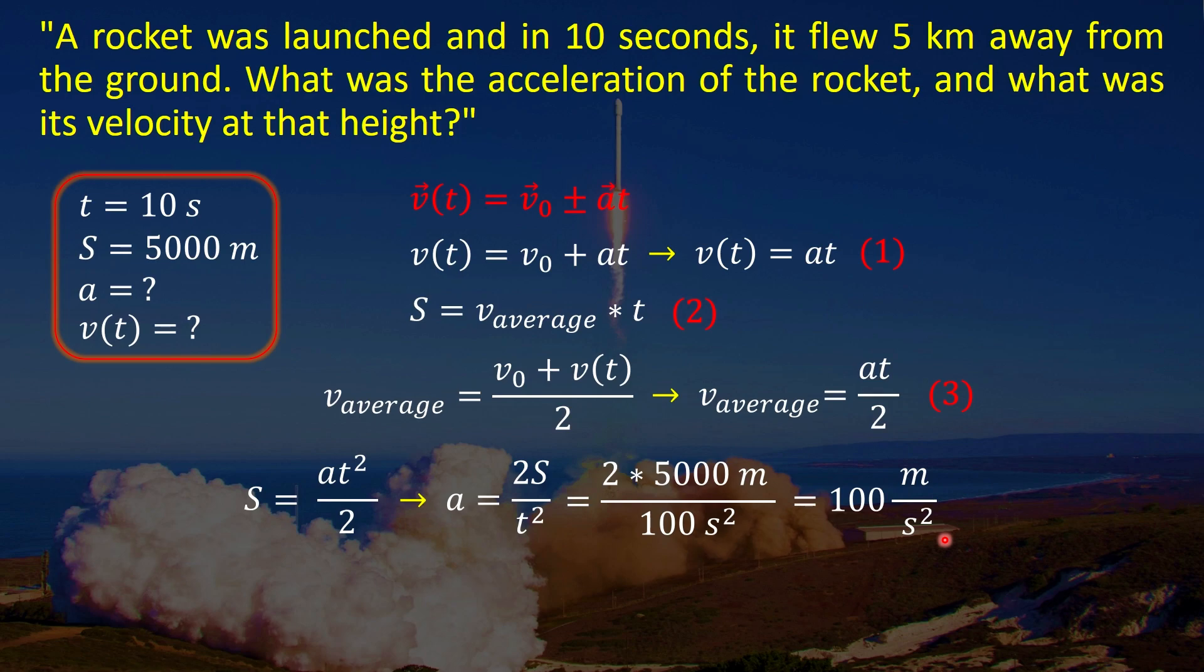Now that we know the value for the acceleration we can calculate the speed. So all we need to do is multiply acceleration by time. And if we multiply it we are going to get our value for the speed. It is 1000 meter per second.